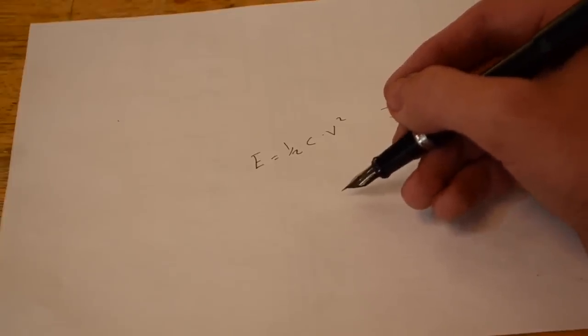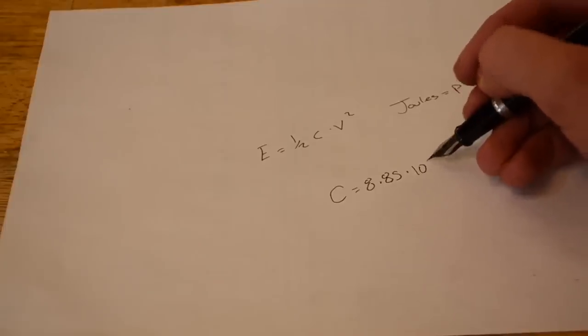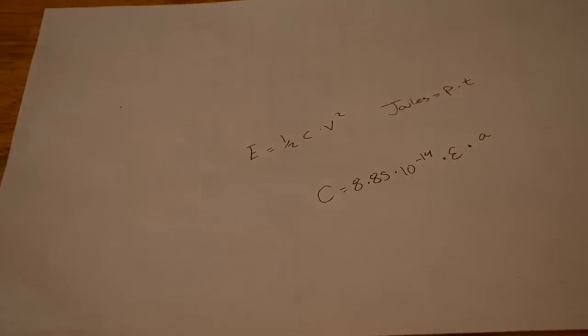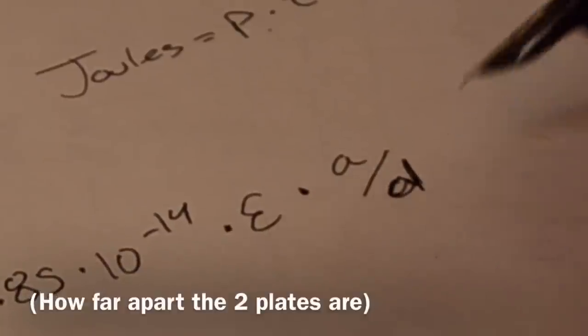Using this formula, we can calculate the capacitance. Capacitance is equal to about 8.85 times 10 to the negative 14, and that's going to be multiplied by the dielectric constant, which is given by this symbol right here. We're going to times that by the plate area in centimeters, divided by the plate spacing.